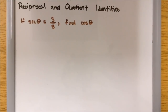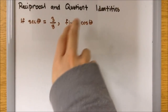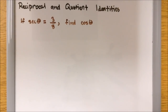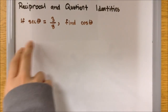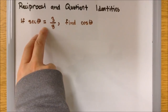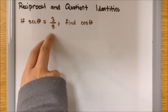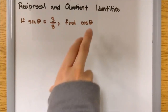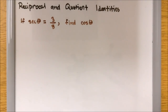We're going to practice with reciprocal and quotient identities. The first part is going to be over reciprocal. Here's our first example: if secant theta equals 3 over 8, find cosine theta.